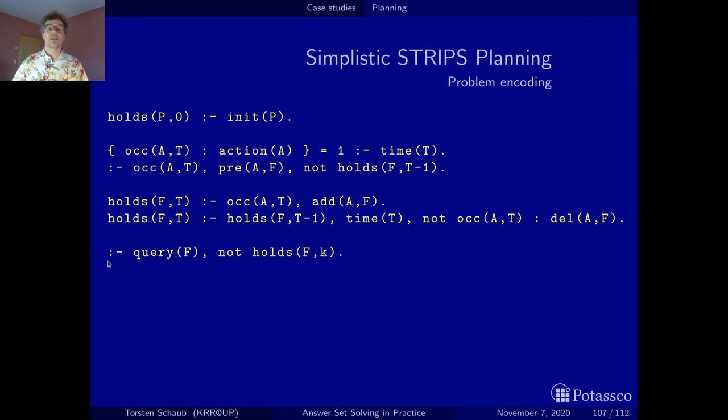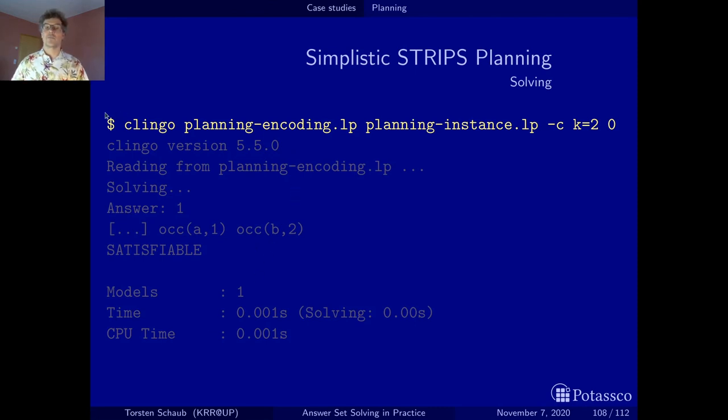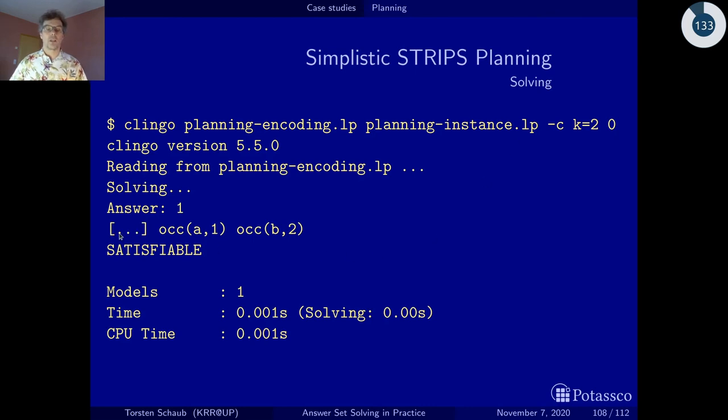And finally, we say that it must not be the case that the query does not hold at the last time step. So, the query must have been derived for the last time step. Keep in mind that we use an integrity constraint. We just want to check because the plan has to make our query true. Now, last but not least, let's run it. So, here is again our terminal prompt. We launch Clingo. This is the encoding. This is the instance. And I say here I want the plan of length 2 and I also want all the plans. And in fact, in our very simple example, there is only one plan and there are lots of atoms that come out. But the most important one is action A occurs at time point 1 and action B occurs at time point 2. And that's the only model that we get. That's the solution.